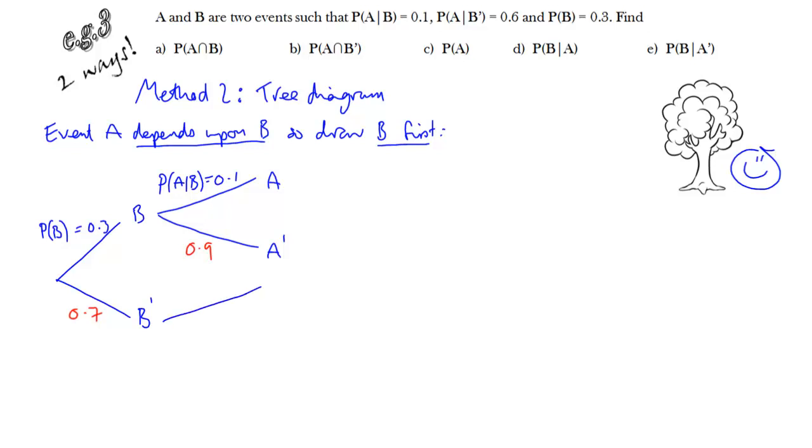In a similar way, for the split here between A occurring and not occurring, the probability that we want is the probability of A given not B. Because in this case we've gone down the branch for not B first. And we're also given that, 0.6. And of course that means that the other one is 0.4. So fairly easily I can build up a tree diagram here.